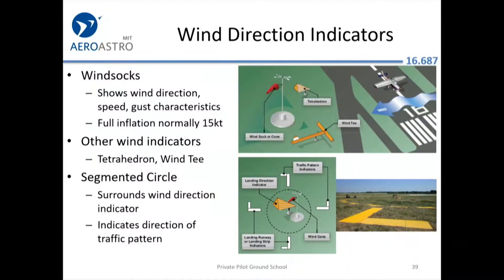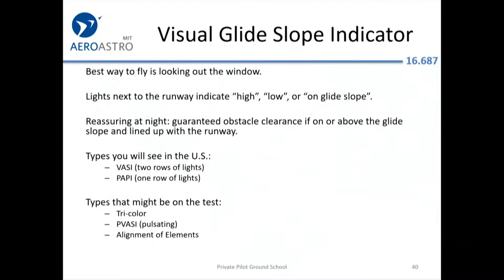There are other types of wind indicators that are pretty uncommon — you'll probably never encounter them. The best way to fly is really looking out the window at what the runway looks like. But things might trip you up if runways are wider, narrower, longer, or shorter than you're used to, making it appear in a different place than it is.